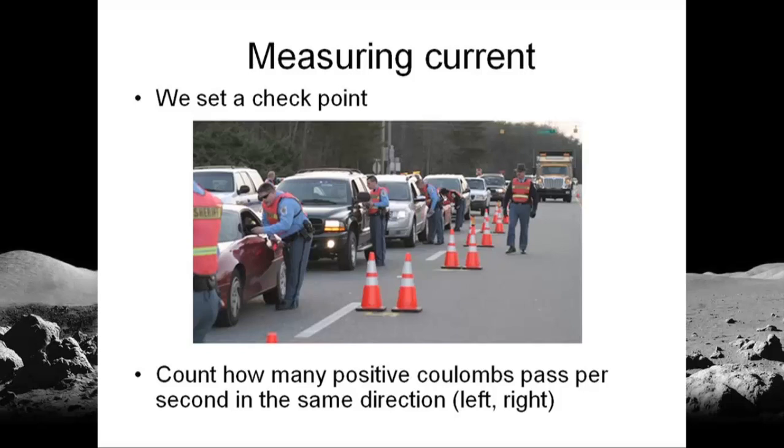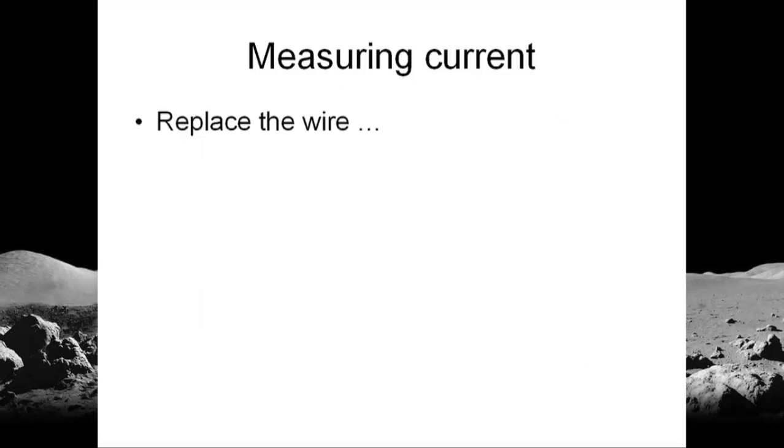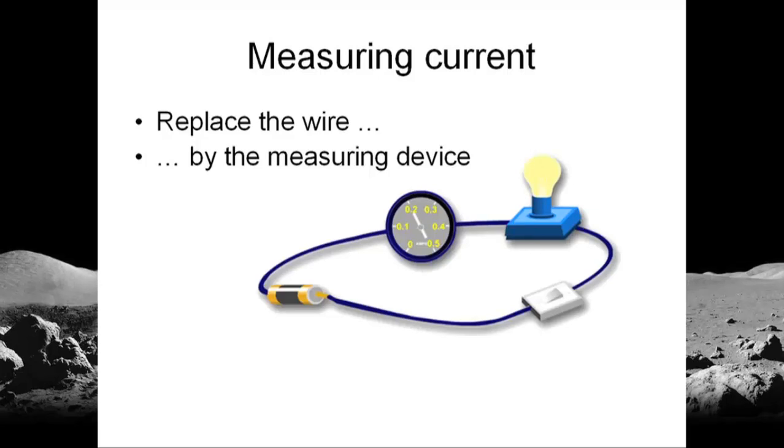And we subtract the positive coulombs that cross the checkpoint in the other direction. Like here, we replace the wire where we want to measure the current by a measuring device, this way. This is the measuring device. It's in the path of the flow of electricity, the path of the current. That instrument will read something like 3 coulombs per second to the right.